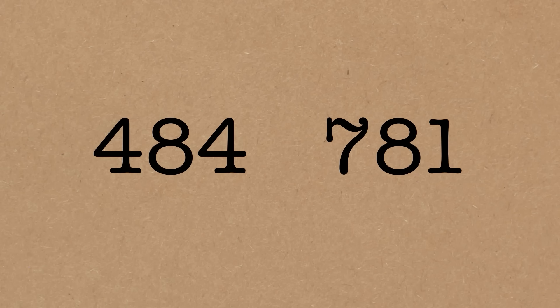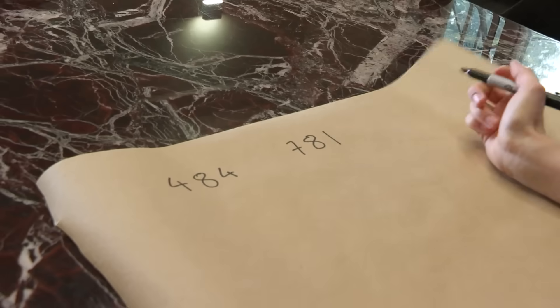So we're going to find the greatest common divisor of these two numbers. So that's going to be the largest number that divides both 484 and 781. Oh, I didn't give you a prime, did I? I don't know yet. We'll find out.